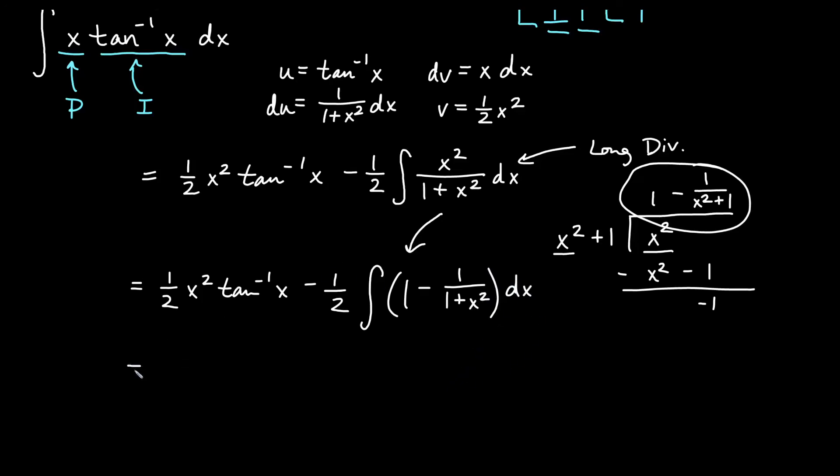Okay, so we go ahead and do this. Notice that the 1 half is out front. So I'll have a 1 half x squared inverse tan of x. We'll have negative 1 half. The antiderivative of 1 would just be x. So that's negative 1 half x. And then here I have negative 1 half. If I distribute that in negative, I would have plus 1 half. And then I would have the antiderivative of this, which would be inverse tan of x plus c.